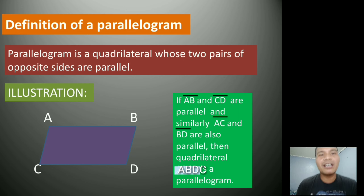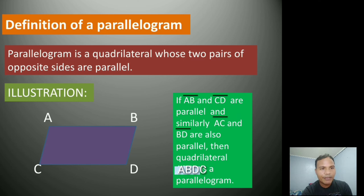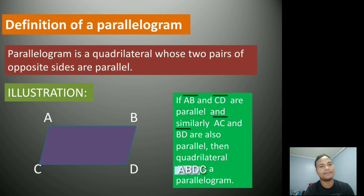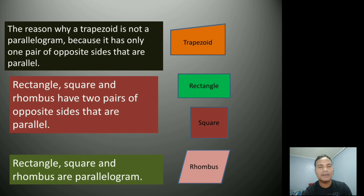Let us go back to the definition of a parallelogram. A parallelogram is a quadrilateral whose two pairs of opposite sides are parallel. For example, in quadrilateral ABDC, if segment AB and segment CD are parallel, and also segment AC and segment BD are parallel, then quadrilateral ABDC is a parallelogram. The reason a trapezoid is not a parallelogram is that it has only one pair of opposite parallel sides, while rectangle, square, and rhombus have two pairs of opposite parallel sides.